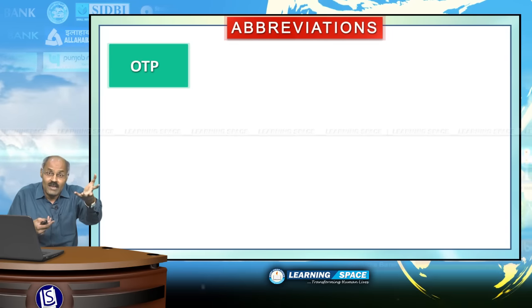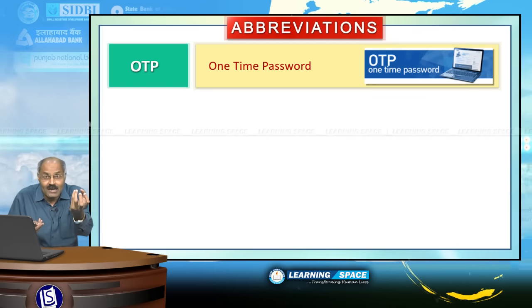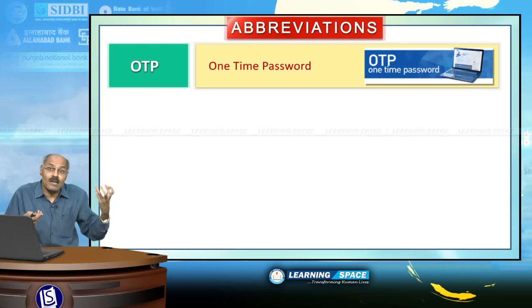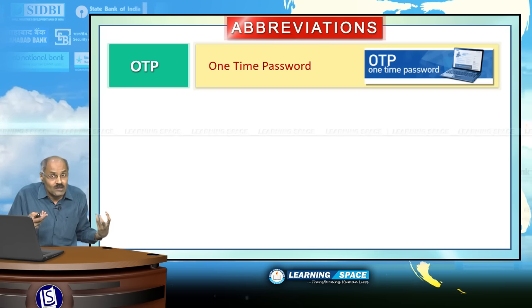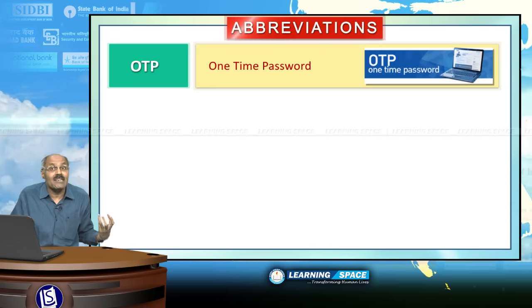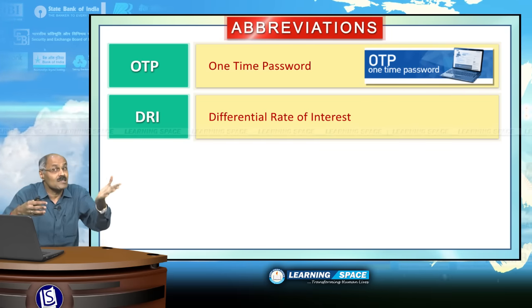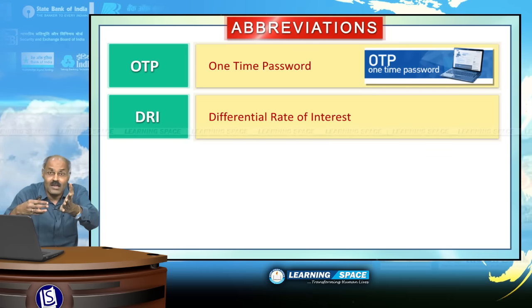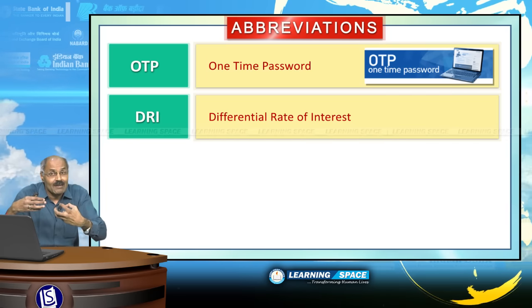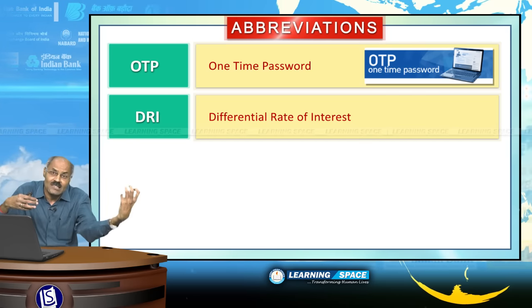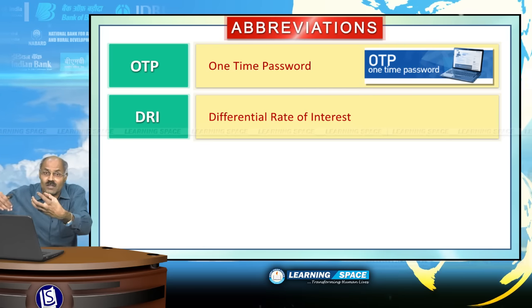OTP is One Time Password. If you are doing some e-commerce transaction, you will receive a one-time password to your registered mobile so as to act as a second-stage authentication. DRI is Differential Rate of Interest — this scheme was brought in the year 1972, where banks are required to lend 1% of their previous year's lending at 4% interest rate to the poorest of the poor in the country.